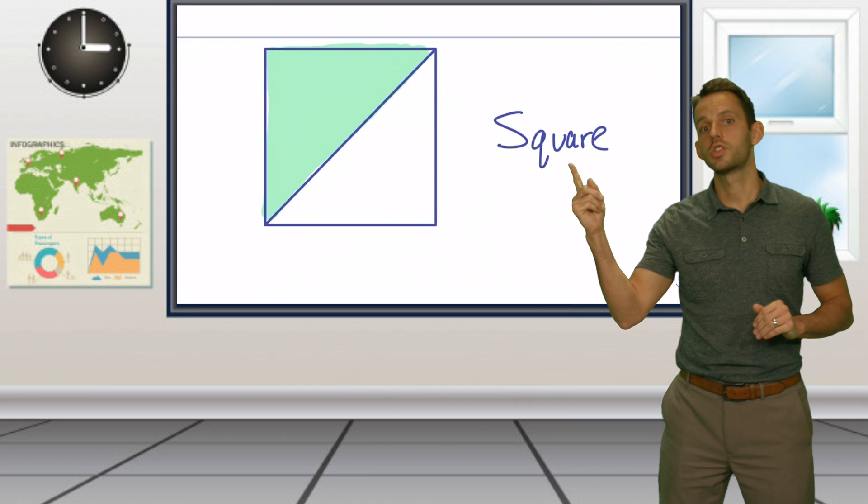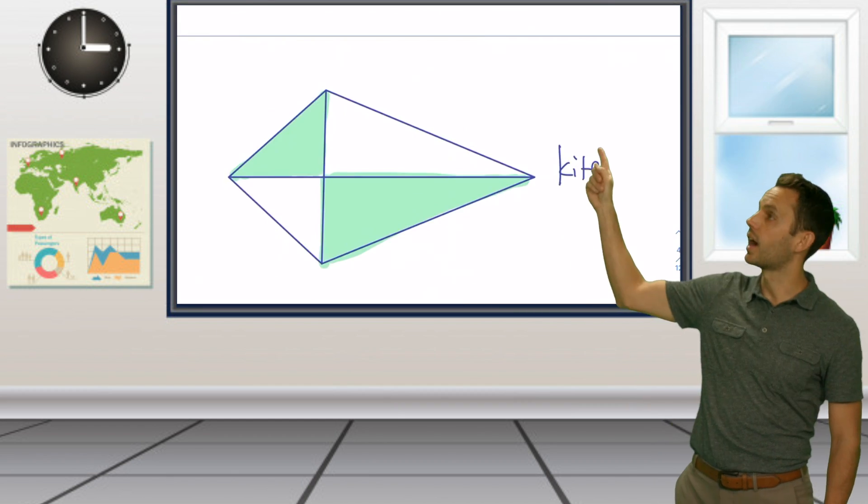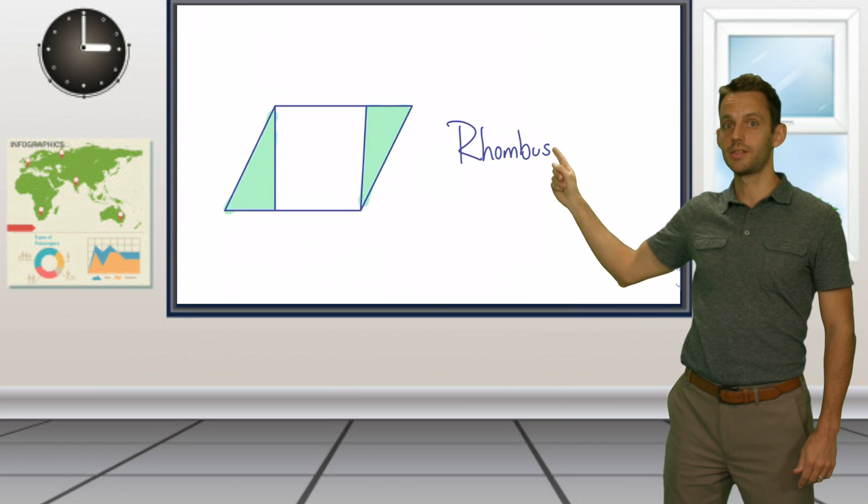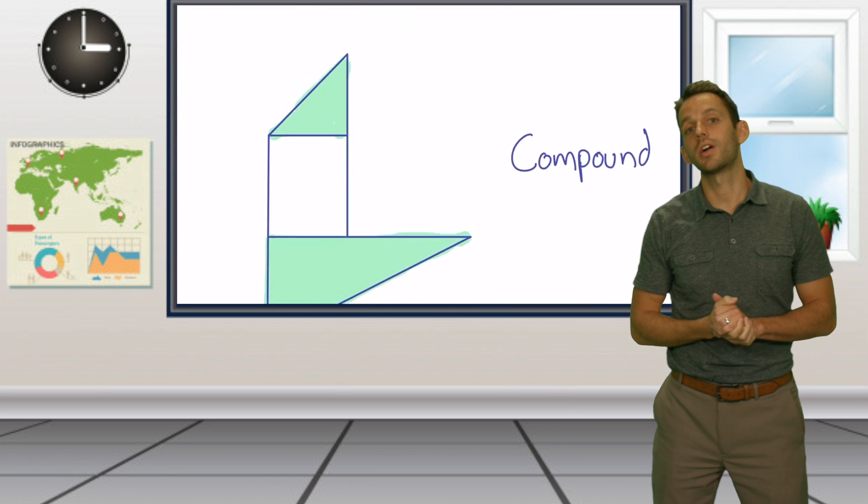For example, squares, rectangles, parallelograms, trapezoids, kites, rhombuses, hexagons, segments of a circle, and many more compound shapes.